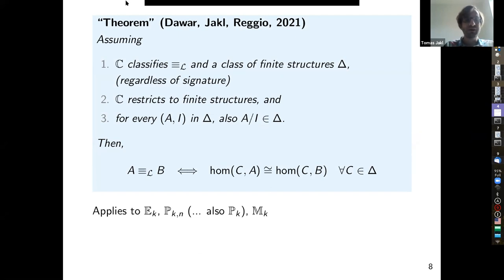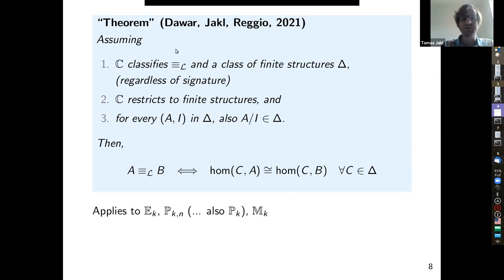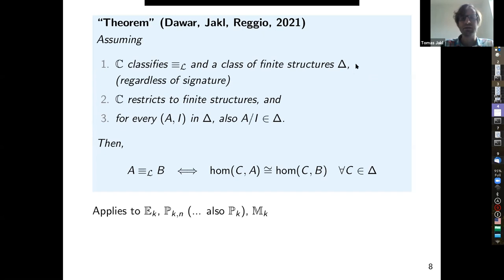The general theorem: if we have a comonad C which classifies a logic fragment — in the sense just shown — and also classifies a class of finite structures Δ, meaning a structure has a coalgebra for C if and only if it's in Δ, and this comonad restricts to finite structures (if A is finite, C(A) is finite), and there is a last technical condition — if a σ_I structure with a coalgebra is quotiented by the I relation it still has a coalgebra — then the logical fragment is captured by counting homomorphisms from structures in the class Δ.